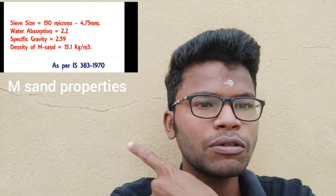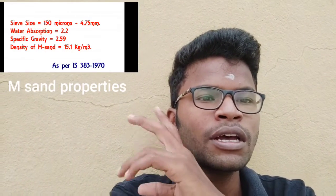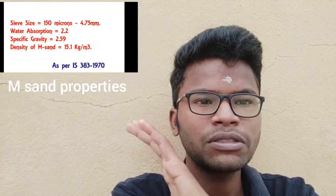So this is the P-sand. First of all, technically, P-sand is also a type of M-sand. So this is the technical property. You can see this natural river sand and this is the M-sand. So this is the difference.